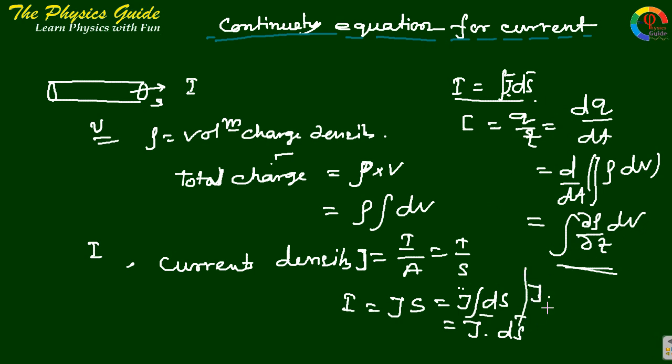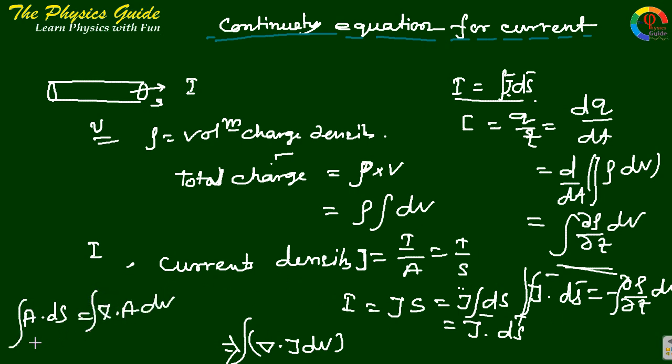So ∫J·dS equals minus ∫(∂ρ/∂t) dV. From divergence theorem, ∫∇·J dV equals ∫J·dS. Using the divergence theorem where ∫A·dS equals ∫∇·A dV, surface integral equals volume integral. This gives ∫∇·J dV equals minus ∫(∂ρ/∂t) dV.